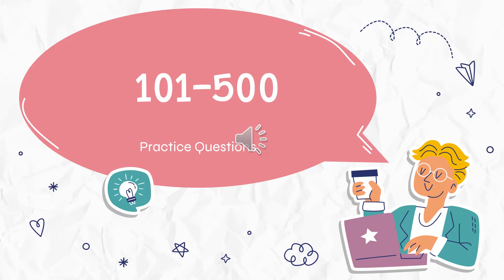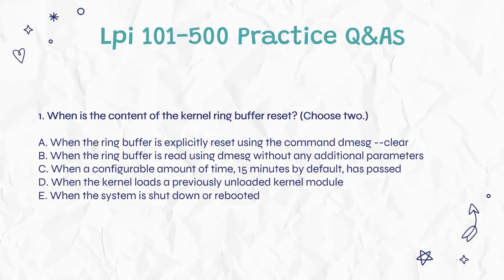This video shares the 101-500 free exam questions online for reading. Question 1: When is the content of the kernel ring buffer reset? (Choose two) a. When the ring buffer is explicitly reset using the command dmesg --clear. b. When the ring buffer is read using dmesg without any additional parameters. c. When a configurable amount of time, 15 minutes by default, has passed. d. When the kernel loads a previously unloaded kernel module. e. When the system is shut down or rebooted.